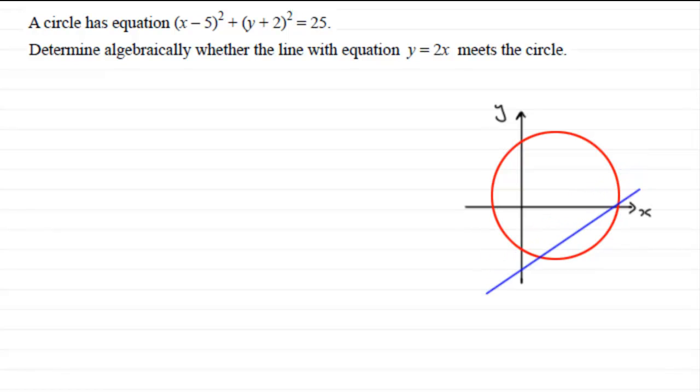But not all lines intersect circles. For instance, you could have this line which just touches the circle, in which case it's a tangent and there'll be just one root at this point here, or our line will miss the circle completely - it won't touch it, so there'll be no roots, no solutions to our equation.